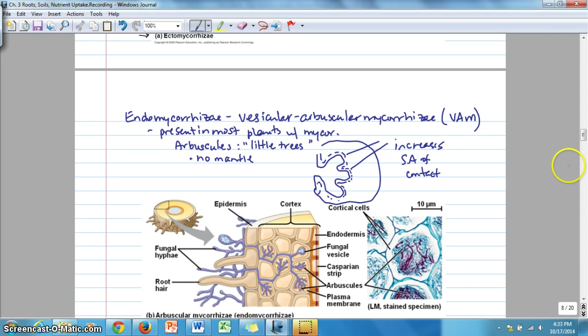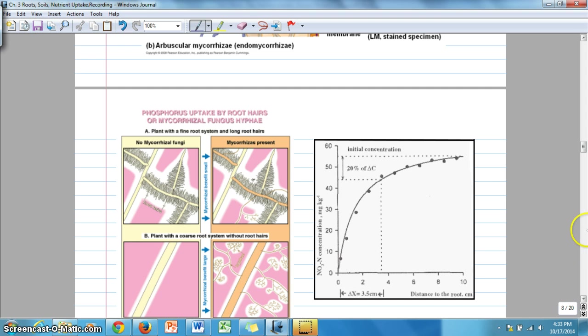All right, so advantages of associating with mycorrhizae. Also we've talked before having root hairs or having, regardless of whether these are symbiosis or root extensions are part of the root, or if they don't have them at all, when nutrients are taken up, then the development of a depletion zone occurs around the root.